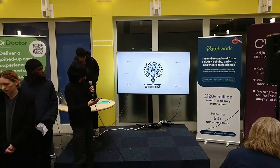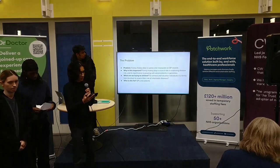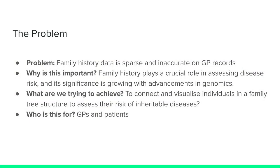Hello, we're Ancestry's GP. So what's our problem? Family history data is very sparse and inaccurate. It's important. Family history plays a crucial role in assessing disease risk and its significance is growing with the advancements in genomics. We're trying to connect and visualize individuals in a family tree structure to assess their risk of inheritable diseases.